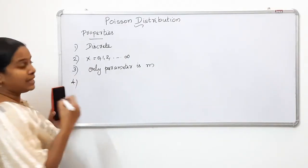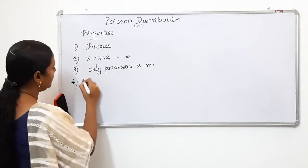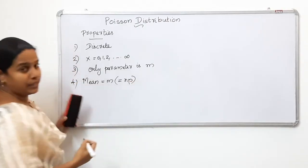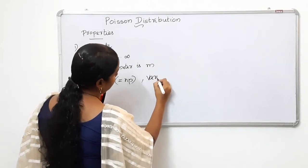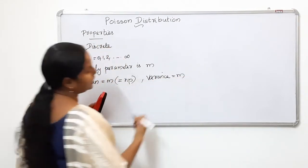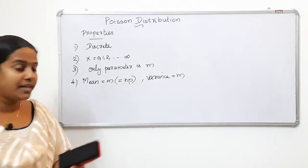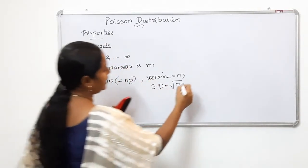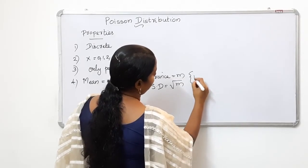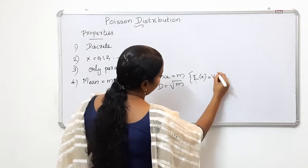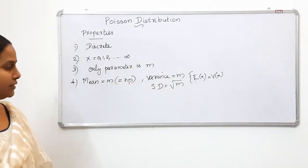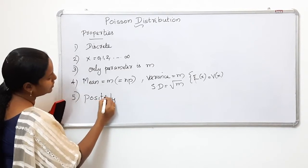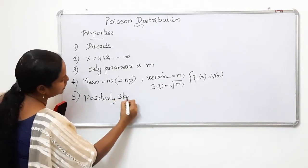We have the mean and variance. The mean is m — that is the expectation of x. The variance is also m — that is the variance of x. For Poisson distribution, mean equals variance equals m. Lastly, Poisson distribution is positively skewed.